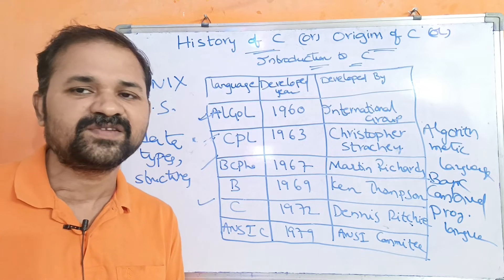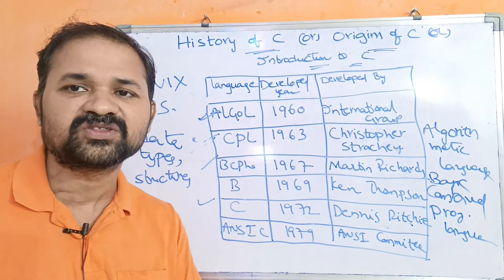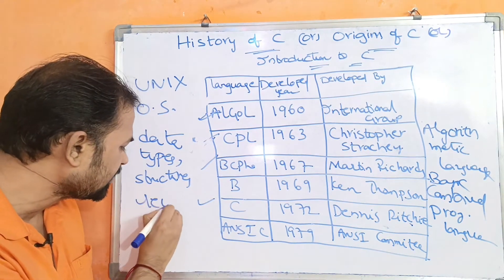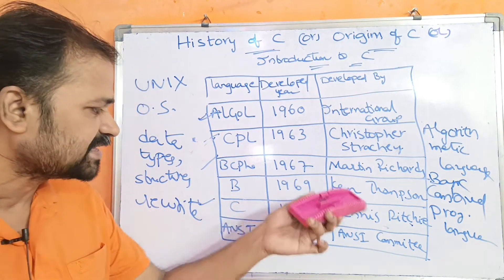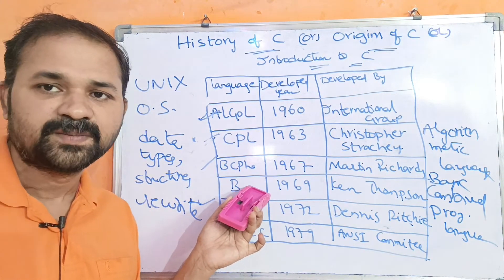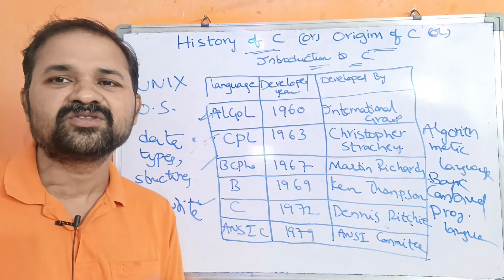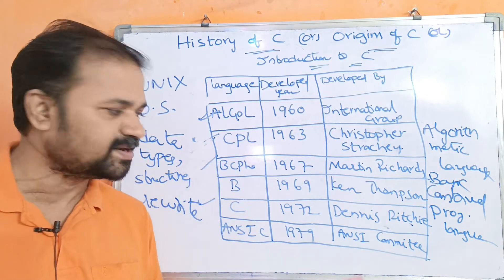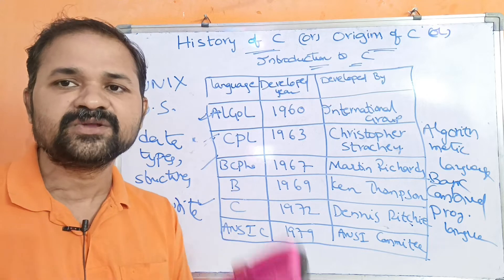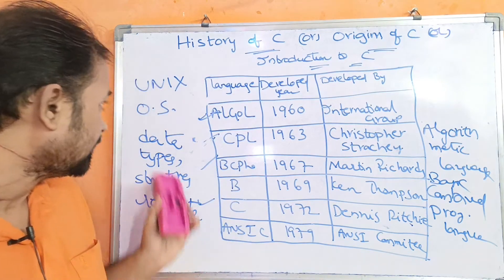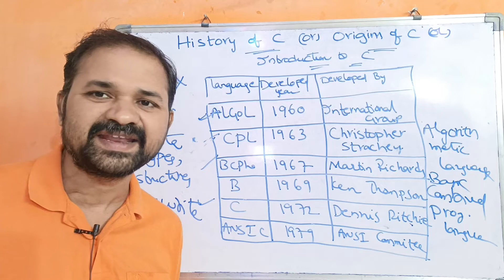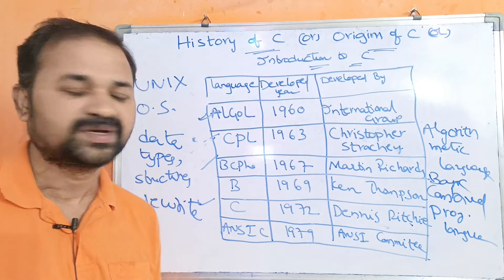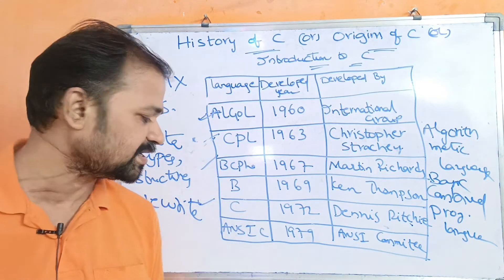C is the alphabet which is next to B in English, so when we solved B's problems we named it C. C was developed in order to rewrite the Unix operating system. Dennis Ritchie used C to rewrite the Unix operating system code. C supports data types and structures.